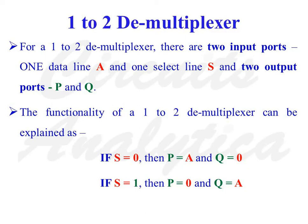The functionality of a 1 to 2 demultiplexer can be explained as follows. If S is equal to 0, then the logic value at the data line A reaches output P, and output Q is equal to 0. On the other hand, if S is equal to 1, then output P is equal to 0 and output Q is equal to A — that means the logic value at data line A reaches output port Q.